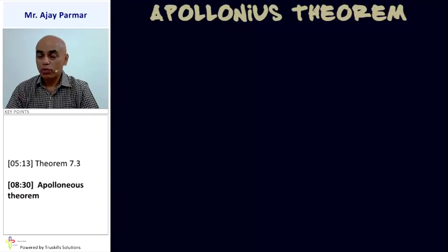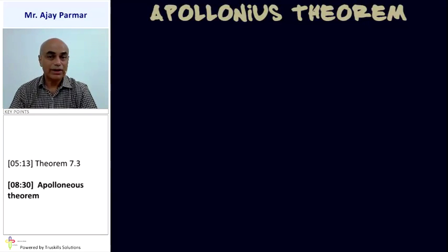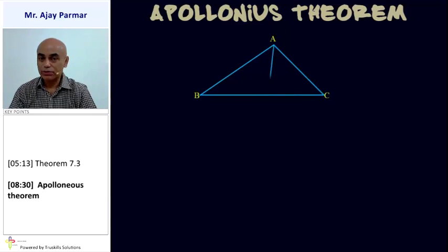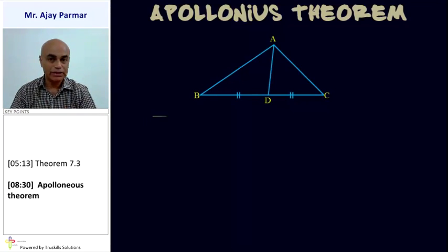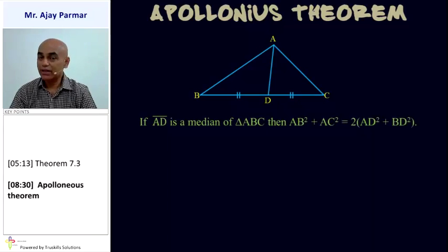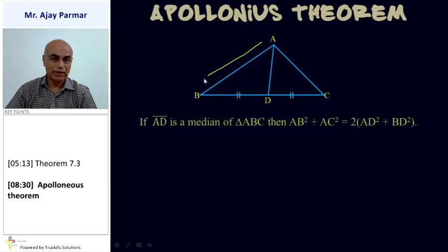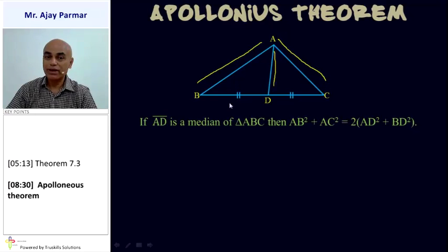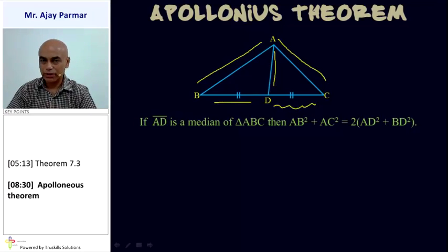We need to remember one important result known as the Apollonius theorem, which we can use directly in numericals. In triangle ABC, if line segment AD is a median — meaning point D is the midpoint of line segment BC — then AB² + AC² = 2(AD² + BD²), or equivalently 2(AD² + CD²). We need to remember this result directly.